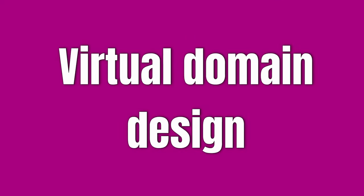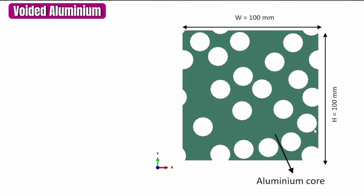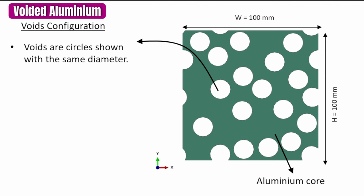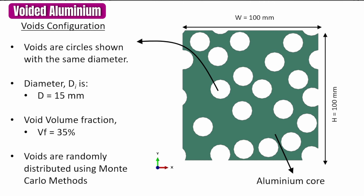The domain we're going to work with is a voided aluminium domain with a length of 100 by 100 millimeters. The void configuration uses uniform-diameter circles — a mono-dispersed system — with a diameter of 50 millimeters. The void volume fraction for the system is 35%, and the voids are distributed randomly using a Monte Carlo-style method.